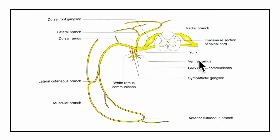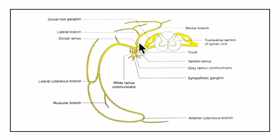Looking at the branches of a typical spinal nerve: here is the dorsal root ganglion, the spinal nerve, its dorsal ramus, and its ventral ramus. The dorsal ramus supplies the dorsal — that is, the posterior — one-third of the body wall and does not supply the limbs. The ventral ramus supplies the ventral or anterior two-thirds of the body wall, including the limbs.